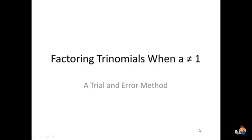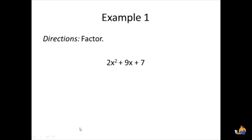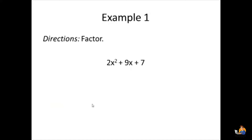This is a video about factoring trinomials when a is not equal to 1. There are many methods to do this, and this one is called the trial and error method. First, let's look at an example. We have the following problem: 2x squared plus 9x plus 7. So we need to factor this.